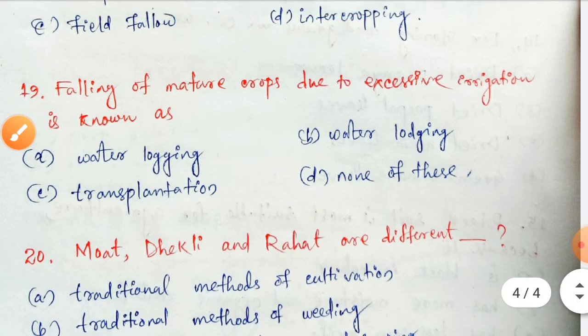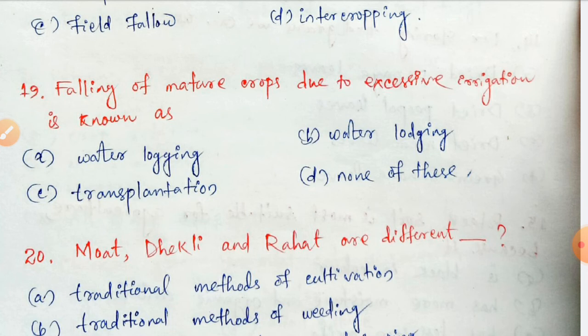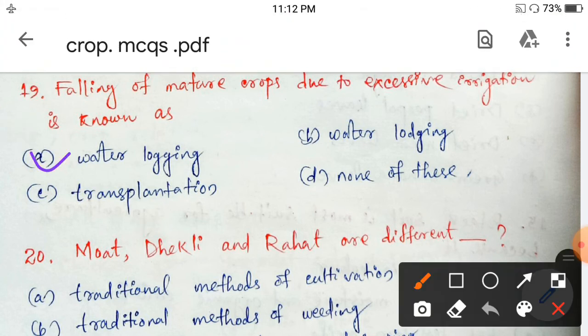Next question: falling of major crops due to excessive irrigation is known as — water logging, water lodging, transplantation, or none of these? Falling of major crops due to excessive irrigation is known as water logging. That is option A.